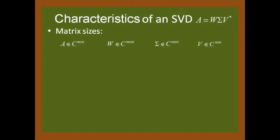W is a square matrix, equal number of rows of A. Sigma is the same size of A. And V is a square matrix, equal number of columns of A.